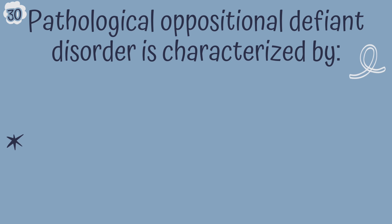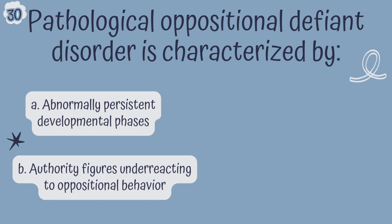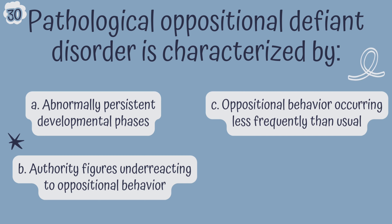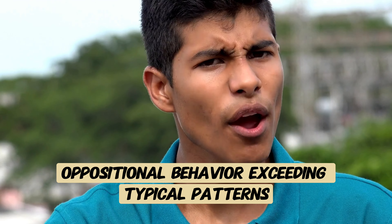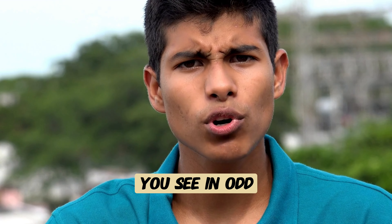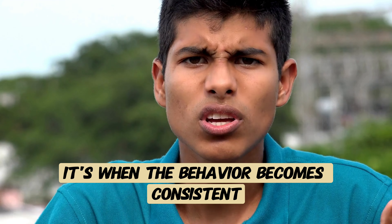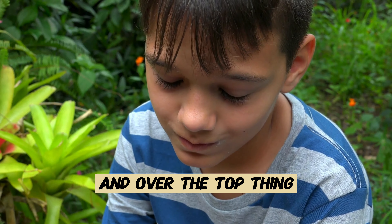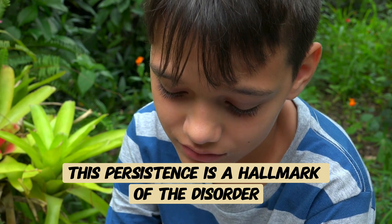Question 30. Pathological oppositional defiant disorder is characterized by: A. Abnormally persistent developmental phases, B. Authority figures underreacting to oppositional behavior, C. Oppositional behavior occurring less frequently than usual, or D. Reoccurring oppositional behavior exceeding typical patterns. The correct answer is D. In ODD, it's not just about a toddler throwing a temper tantrum — it's when behavior becomes consistent and over-the-top, happening more frequently and intensely than expected for their age.